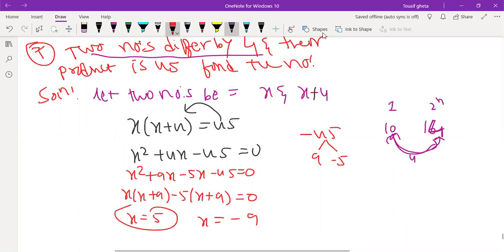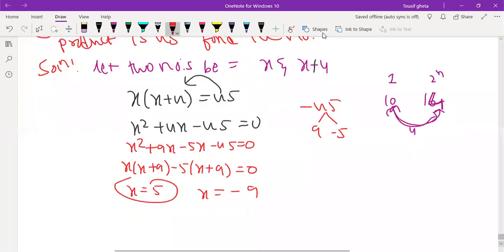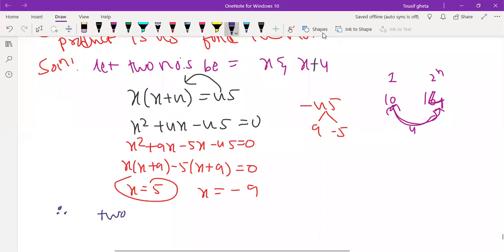So I will use the positive value. Okay. So therefore two numbers are x is equal to 5 and x plus 4 I took right. So 5 plus 4 is equal to 9. So answer will be right.